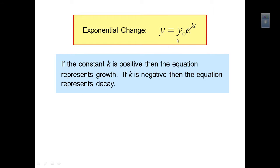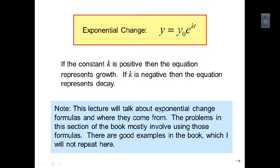The exponential change equation is y equals y₀ times e to the kt. If the constant k is positive, the equation represents growth — the y value increases over time. If k is negative, the equation represents decay — the y value decreases over time. This lecture covers exponential change formulas and where they come from; the problems in this section mostly involve using those formulas, with good examples in the book that we'll work on in class.